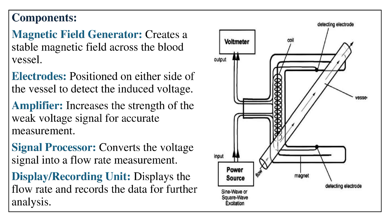Components: Magnetic Field Generator — creates a stable magnetic field across the blood vessel. Electrodes — positioned on either side of the vessel to detect the induced voltage. Amplifier — increases the strength of the weak voltage signal for accurate measurement. Signal Processor — converts the voltage signal into a flow rate measurement. Display/Recording Unit — displays the flow rate and records the data for further analysis.